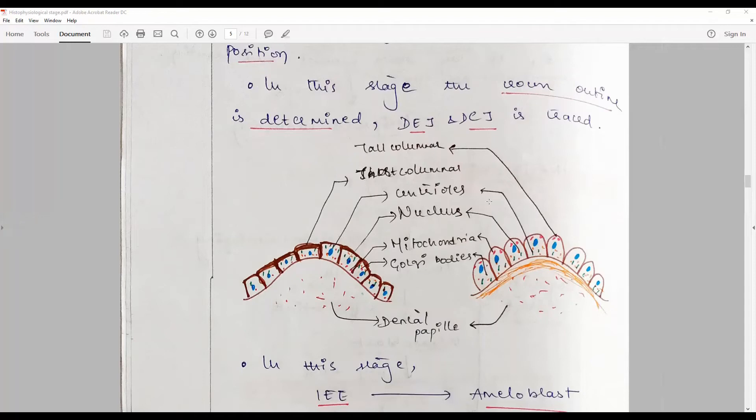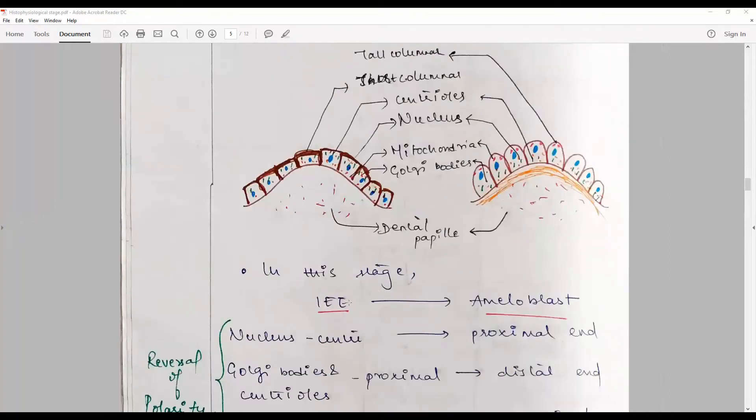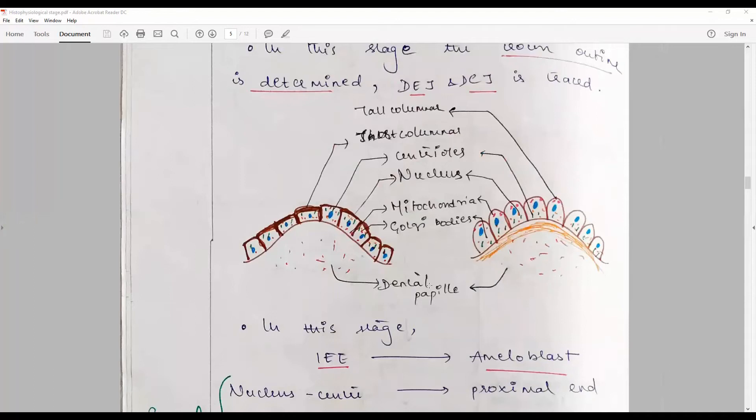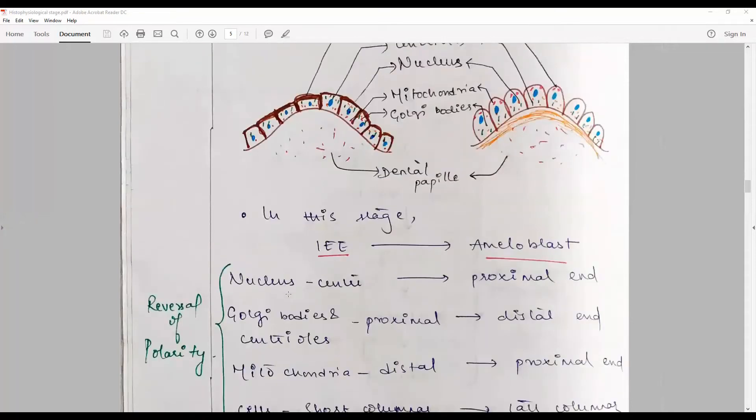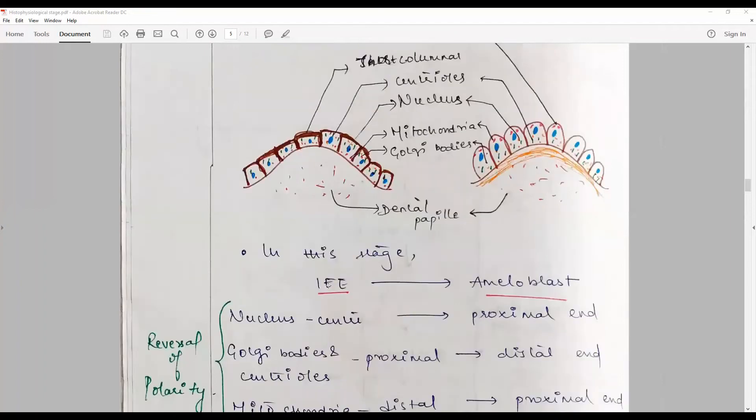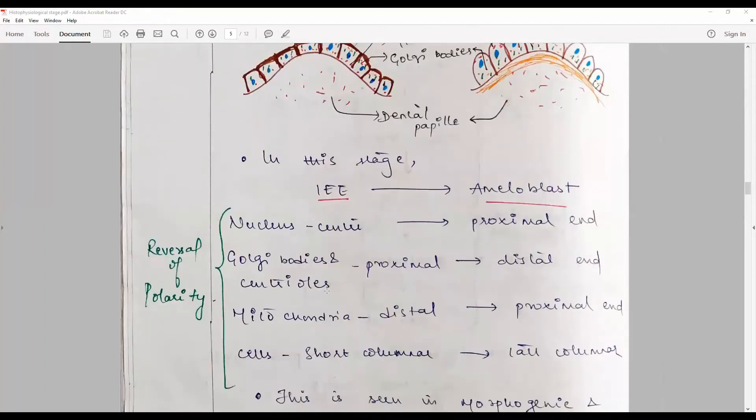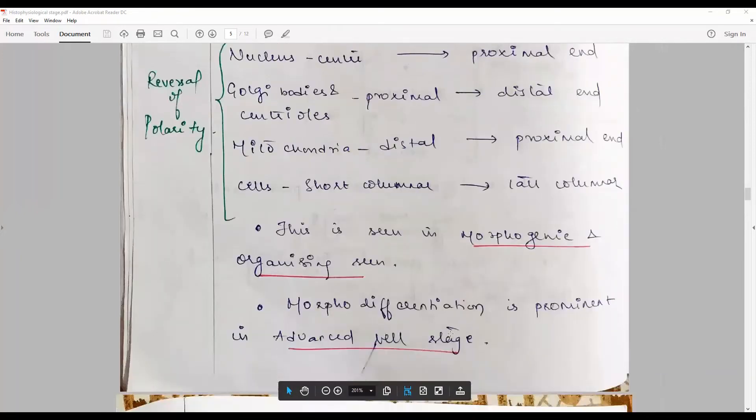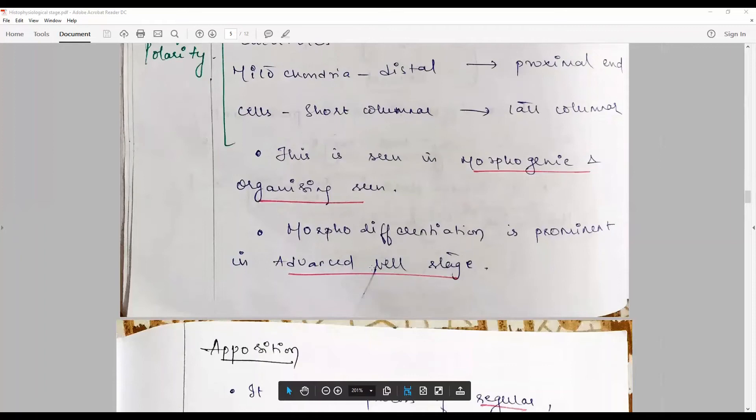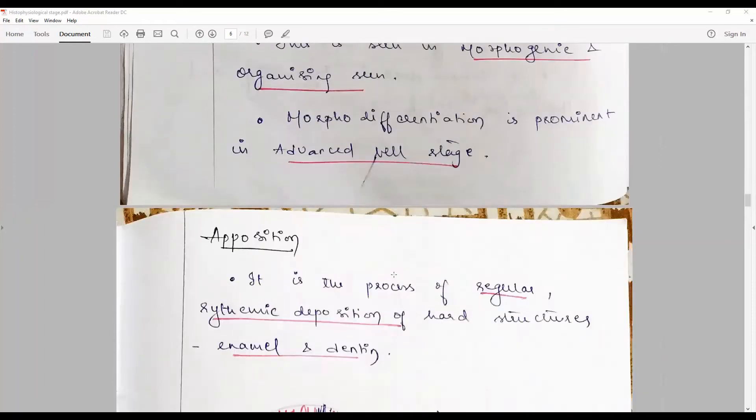The centrioles placement, the nuclear position, the mitochondrial polarization, the Golgi bodies, the dental papilla becoming organized. In this stage, the inner enamel epithelium turns into ameloblast. This single diagram says to the examiner that you have mastered this subject. The key to this diagram: reversal of polarity, nucleus from center to the proximal end, Golgi and centrioles from proximal to distal end, mitochondria from distal to proximal, from short columnar to tall columnar. This is the morphogenic and organizing, and morpho differentiation is prominent in advanced bell stage.